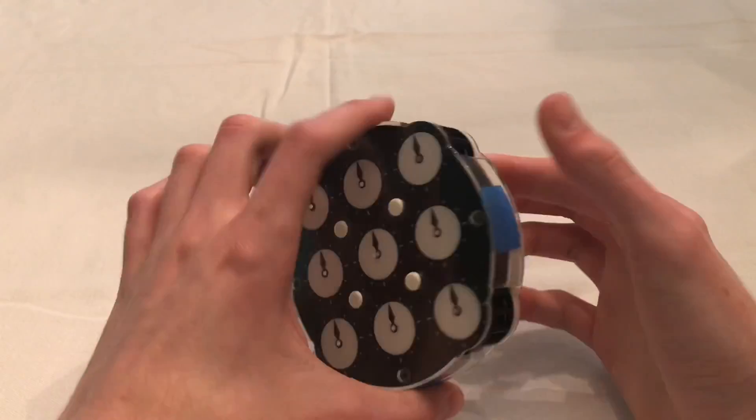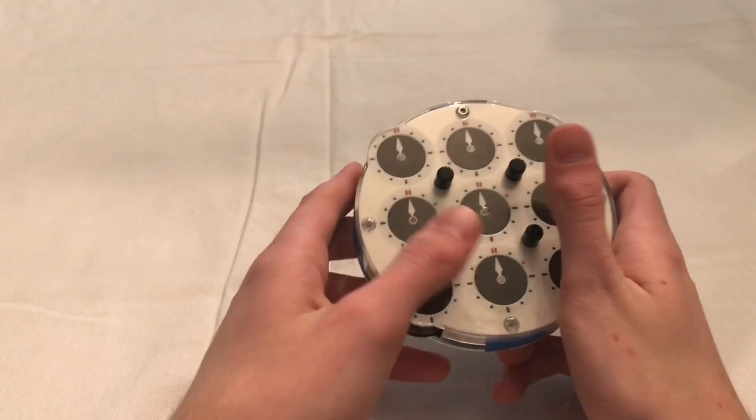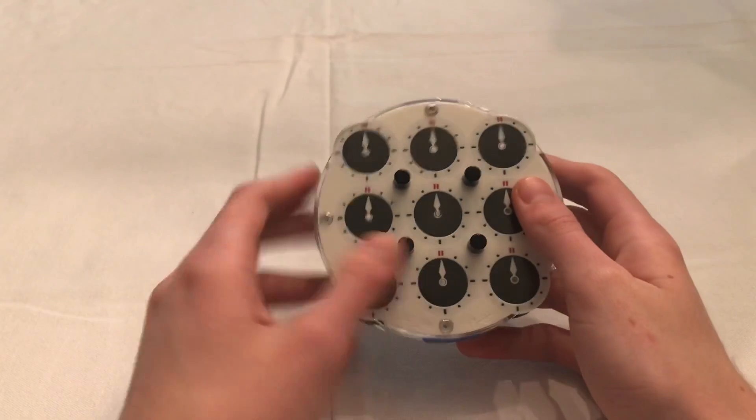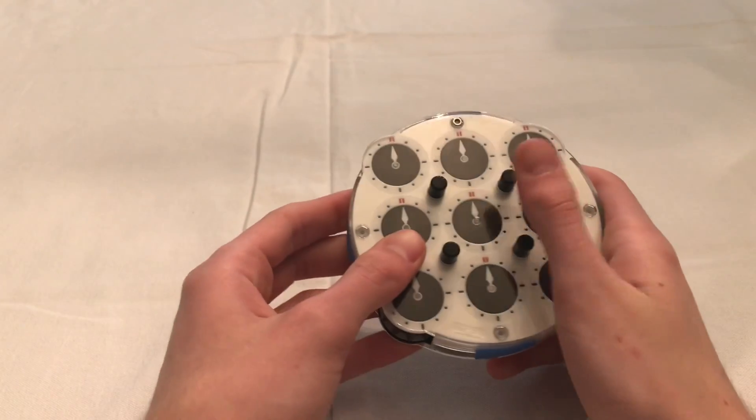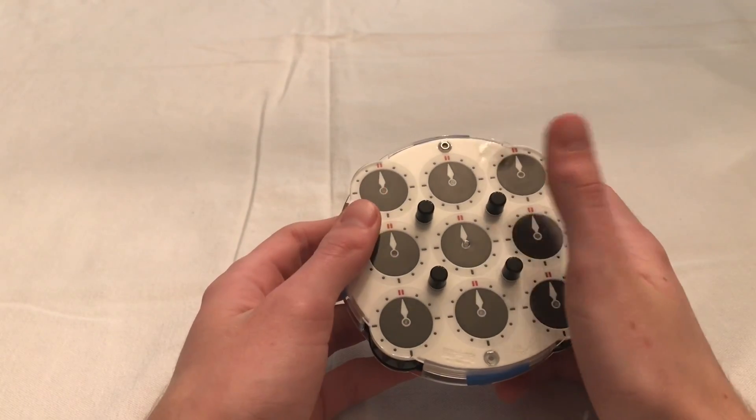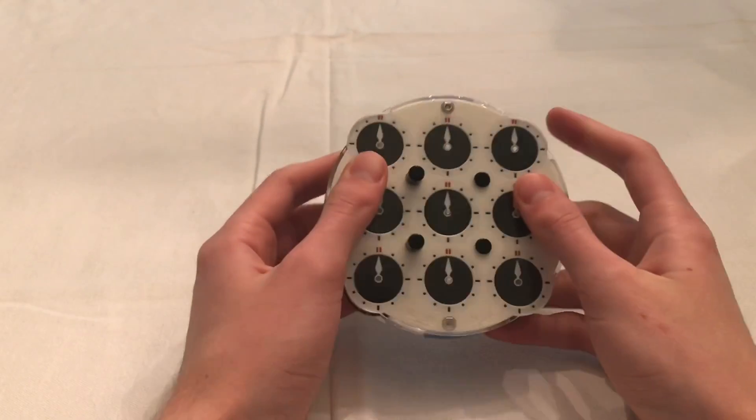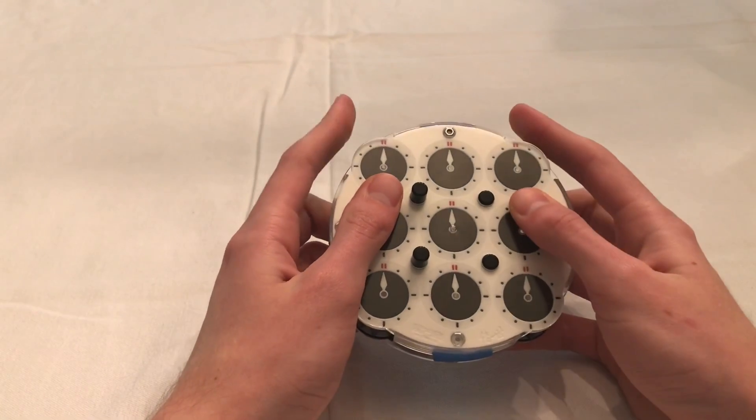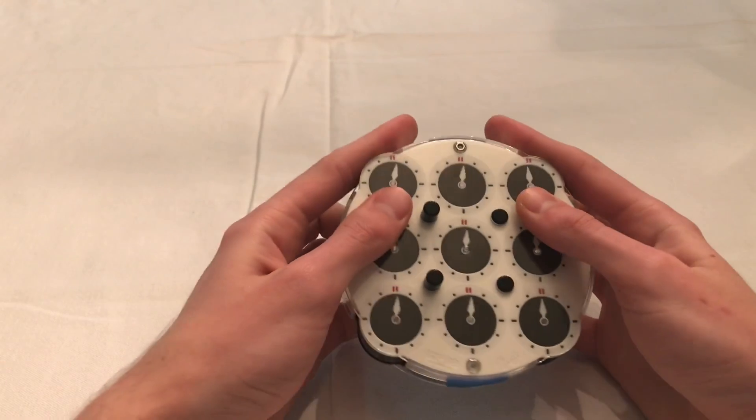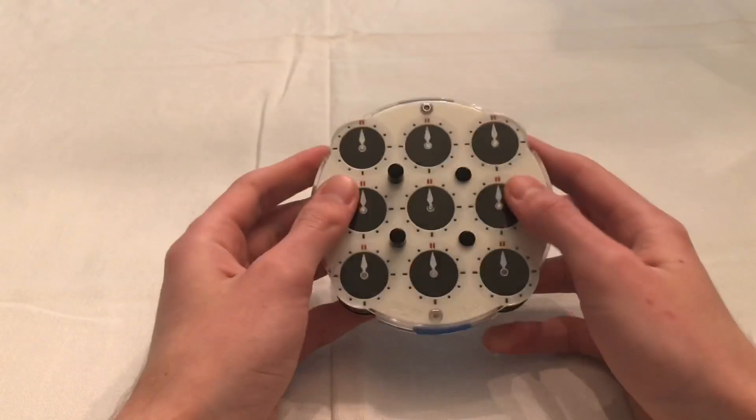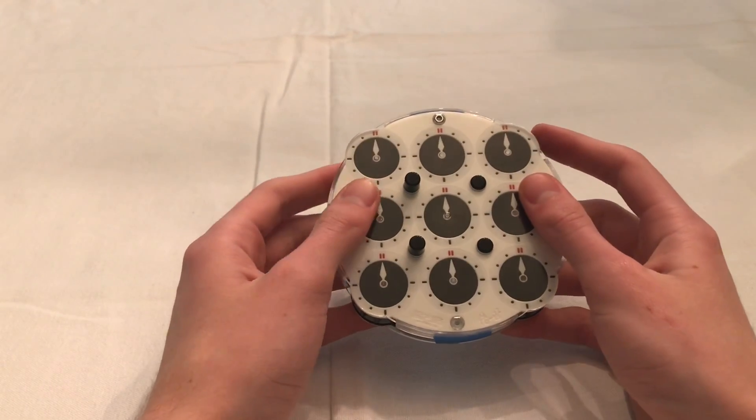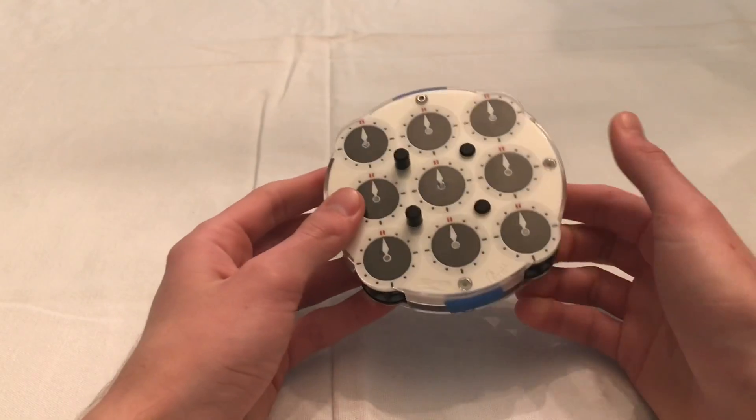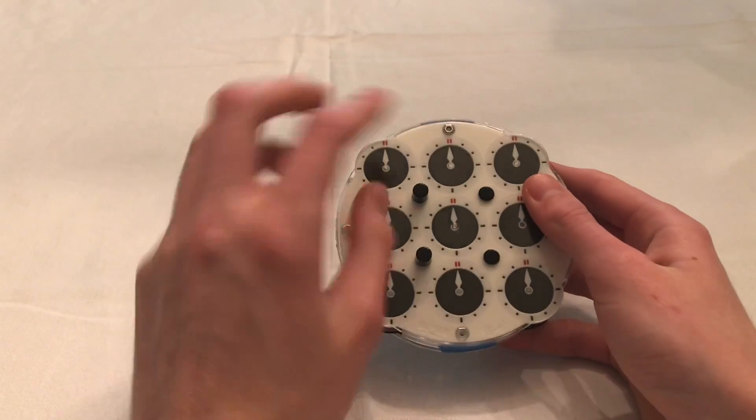If you're an astute observer, you may have noticed that doing the turns on the back does not require you to change the pins. This means that you can turn both the front and the back at the same time. You can use this to your advantage in solves by executing the numbers you memoed on the back at the same time as doing the moves on the front.